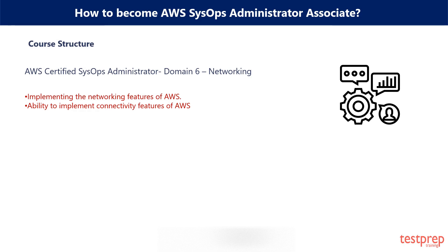Domain 6: Networking. This domain includes various concepts of networking and covers 14% of the exam weightage. The section includes topics such as: first, implementing the networking features of AWS; second, ability to implement connectivity features of AWS.